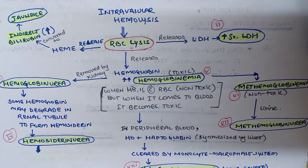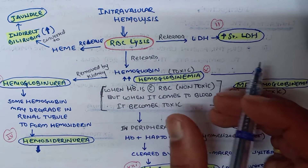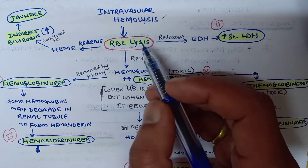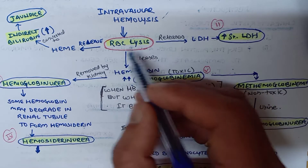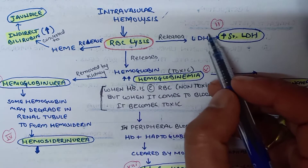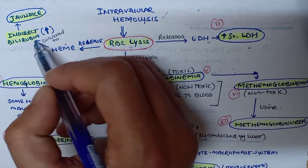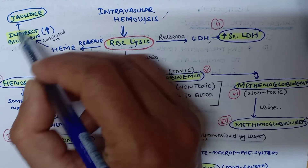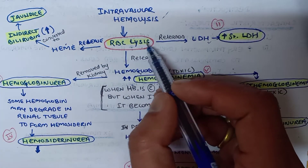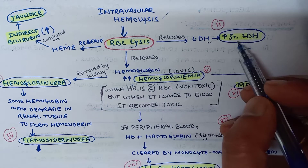Now we'll discuss the mechanism of exclusive findings in intravascular hemolysis. When RBC lysis occurs, the cell releases heme, hemoglobin, and LDH. The heme is converted to indirect bilirubin, resulting in jaundice. The released LDH causes an increase in serum LDH.